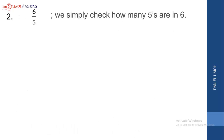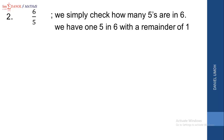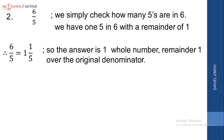Let's look at example 2: converting 6 over 5. We simply check how many 5s are in 6. We have only one 5 in 6 with a remainder of 1. Or you can say 6 divided by 5, which gives 1 remainder 1. So 6 over 5 equals 1 whole number, remainder 1, all over 5 — the original denominator. I hope you understand how to convert from an improper fraction to a mixed fraction.